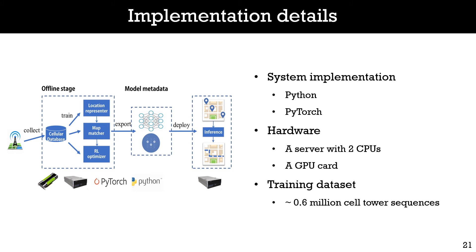Now, we describe the implementation details of our system. We develop our system in Python. The code is implemented in PyTorch, an open-source machine learning framework. To train our system, hardware resources and training data are necessary. For the hardware resources, we run our system on a server with two central processing units. We also use a graphic processing unit card to accelerate the training process. For the training data, we use about 600,000 anonymous cell tower sequences to train the three models in our system, which can be acquired from the mobile carriers.